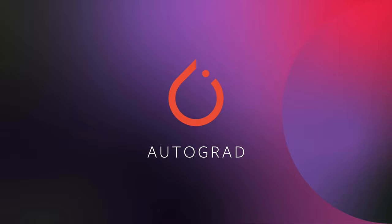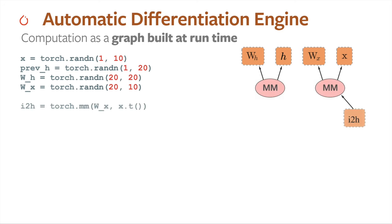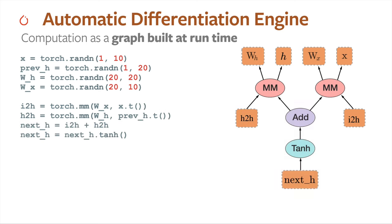As an introduction to Autograd, PyTorch's automated differentiation engine, let's consider the basic mechanics of a single training pass. For this example we'll use a simple recurrent neural network, or RNN. We start with four tensors: X the input, H the hidden state of the RNN that gives it its memory, and two sets of learning weights — one each for the input and the hidden state. We multiply the weights by their respective tensors using matrix multiplication, add the outputs, pass the result through an activation function (hyperbolic tangent), and compute the loss — the difference between the correct output and the actual prediction.